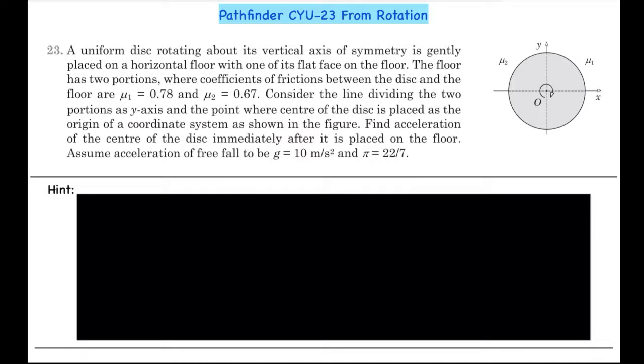The floor has two portions where coefficients of frictions between the disc and the floor are mu1 equals to 0.78 and mu2 equals to 0.67. Consider the line dividing the two portions as y axis and the point where center of the disc is placed as the origin of a coordinate system as shown in the figure.